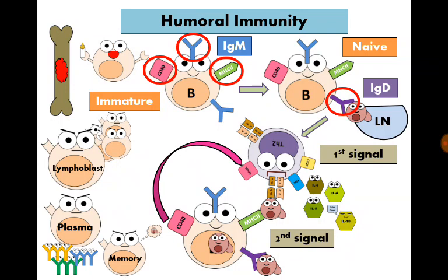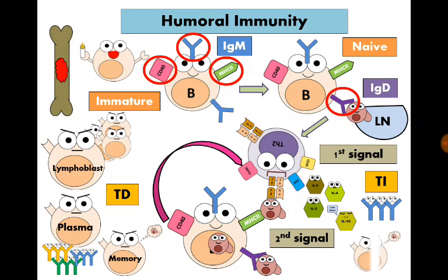All those events occurred in response to T helper 2 cell activation so this antigen is called T dependent antigen. There are some independent antigens that attach to B lymphocytes and don't need help from the T helper 2 cells. Those are called T independent antigens and their response is only immunoglobulin M, no class switching and no memory cells.